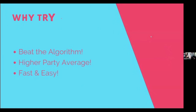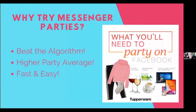I want you to know that there is no wrong way, there is no right way to do parties — you do what's working for you. I needed to pivot into messenger parties because my Facebook event and Facebook group parties were no longer hitting that $500 party average. I was fighting the algorithm to get people to see the content I was posting. If your parties are already at that $500 and above mark, keep doing what you're doing. Don't fix what's not broken. My messenger party is way higher at party average — I'm able to hit that $500 level super easy, all the way up into the thousands in a 24-hour period. It's super fast, it's super easy.